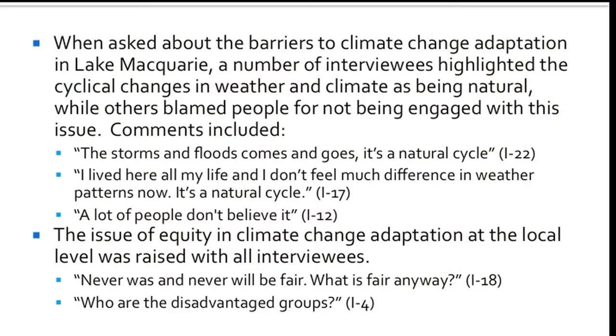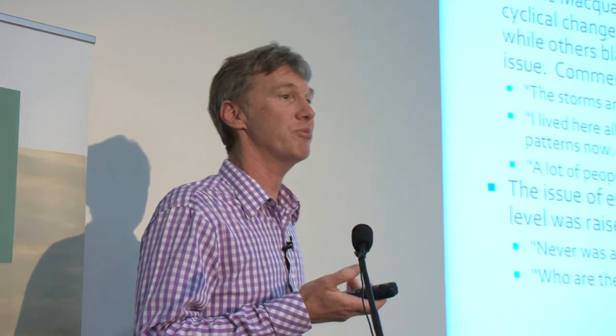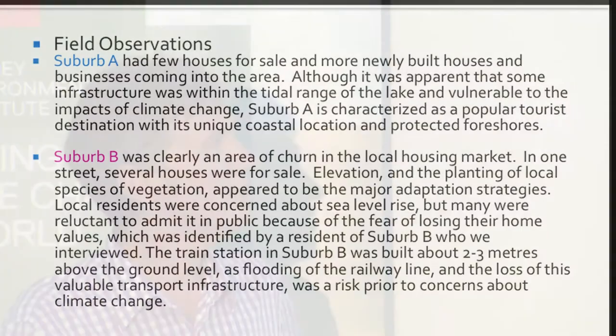When asked about barriers to climate change adaptation in Lake Macquarie — remembering this is one council that's pretty much at the forefront compared to other local government councils — a number of interviewees highlighted the cyclical changes in weather and climate as being natural, while others blamed people for not being engaged. You get quotes like: 'storms and floods come and go, it's a natural cycle, I lived here all my life and I don't feel much difference with weather patterns now,' and 'just a lot of people don't believe it.' There's also the issue of equity: climate change adaptation at the local level was never fair, never will be fair. What is fair anyway? Some people question that part of the construct to begin with.